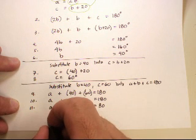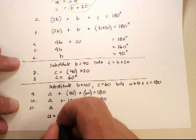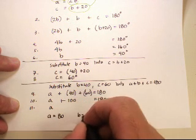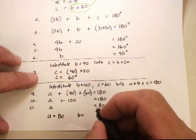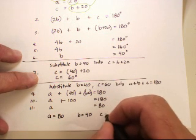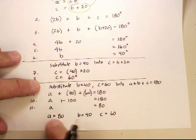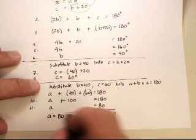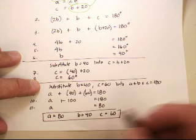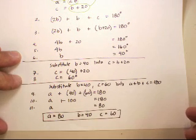So my final answer is A equals 80 degrees, B is equal to 40 degrees, and C is equal to 60 degrees. And when you add all three of those up, you get all the angles in a triangle.